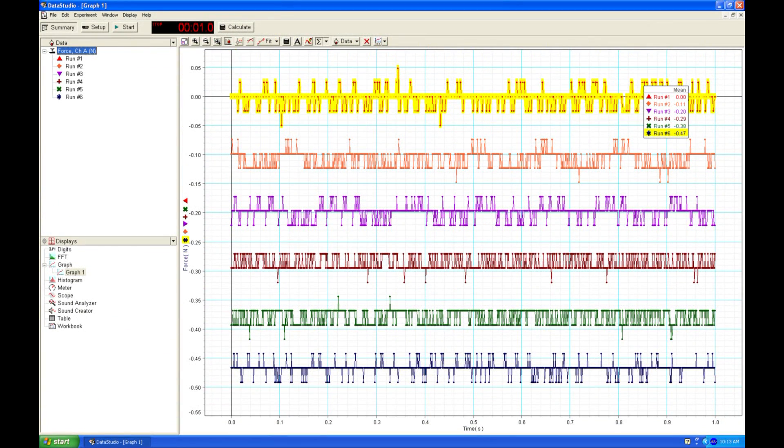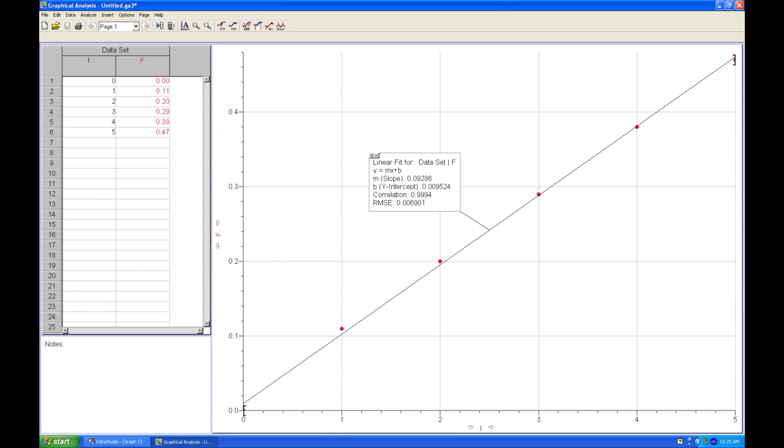Here we have recorded the force for a variety of currents ranging from 0 through 5 amps. The force sensor electronics make the force data appear noisy, but the mean values are reliable, and the standard deviation is not as large as you might think. A plot of force on the y-axis versus current on the x-axis yields the anticipated straight line with a slope to be compared with N times B times l.